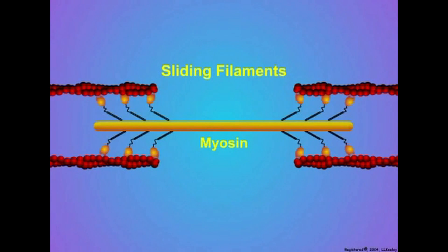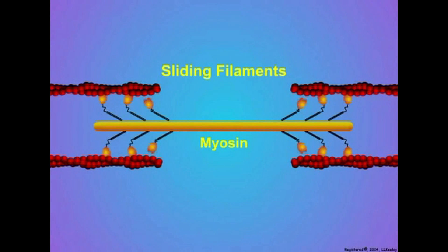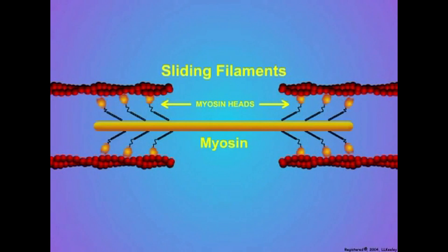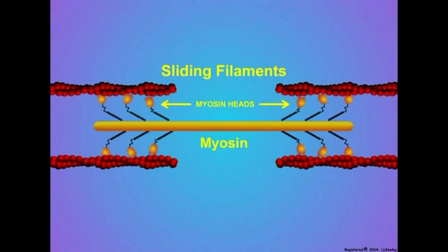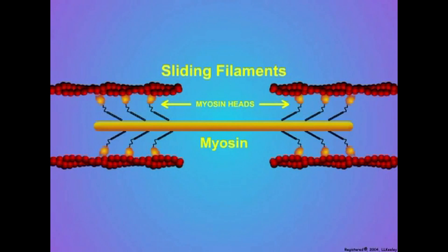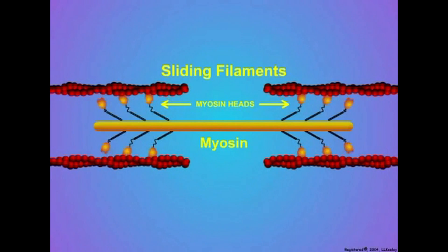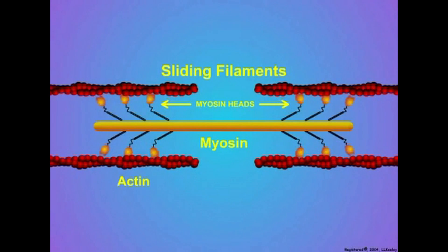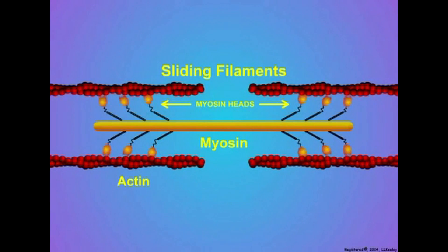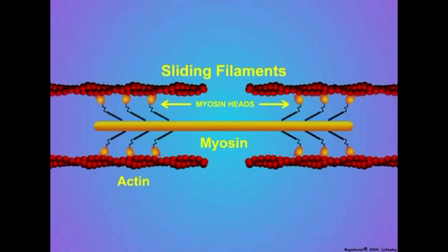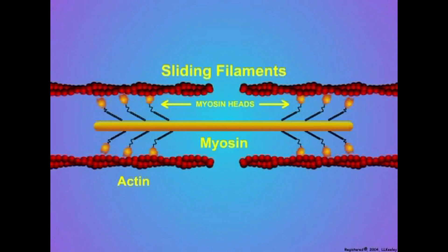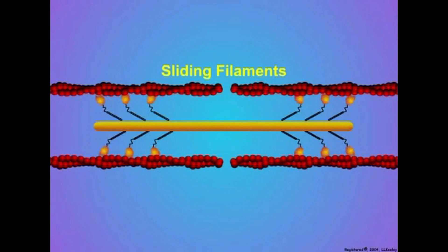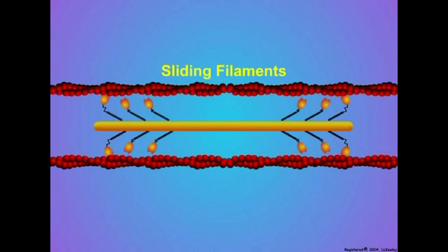Myosin crosslinking occurs by a myosin head comprised of multiple proteins capable of conformational and positional changes. The myosin heads bind actin binding sites and undergo a conformational rearrangement in their proteins. The conformational rearrangement rotates the position of the head and pulls the actin along the myosin.